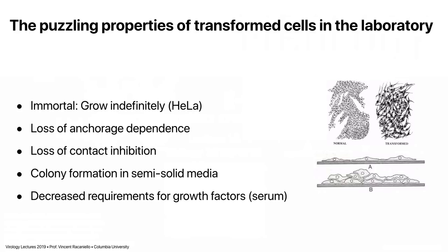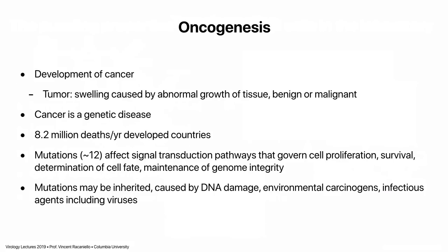That's what transformation is. It is different from oncogenesis. Oncogenesis is the development of cancer, which is different from transformation. Cancer can lead to a tumor — a swelling of tissue caused by abnormal growth. It can have benign tumors that remain in place or malignant ones that metastasize. This is a genetic disease. We have finally learned that after many years of research. Cancer is a genetic disease, with about 8 million deaths per year in developed countries. We don't have good statistics from underdeveloped countries, so the global number is higher.